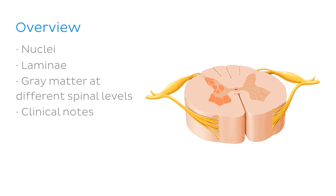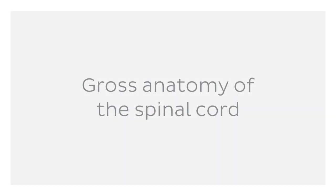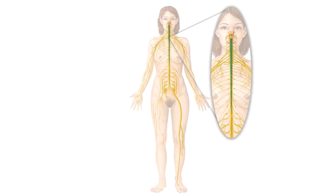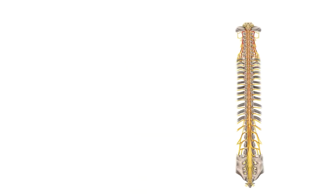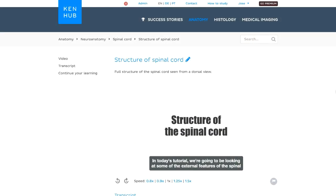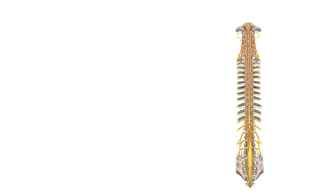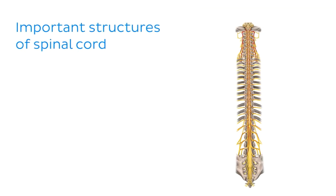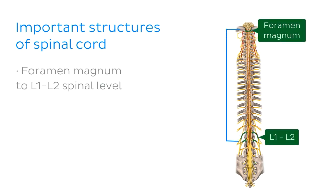Before we start learning about the inner structures of the spinal cord, it's useful to quickly remind ourselves of how it looks from the outside, because it is often related to what's on the inside. The spinal cord is a tubular structure which extends from the foramen magnum of the skull to approximately L1 to L2 spinal level of the vertebral column.